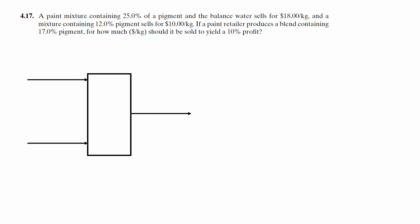Now we can replace the variables in our question for our variables for our calculation. So we have M1 for our first stream, which consists of 25% of a pigment, which we can write as the mass fraction is 25%, and the balance of water, so that means we have to take 1 minus 0.25, which is going to be 0.75 kilograms, and that's our mass fraction for water, and the price is at $18 per kilogram.